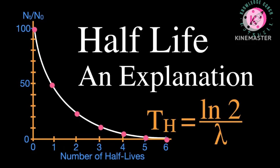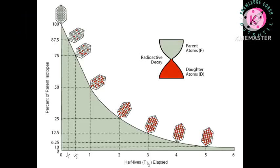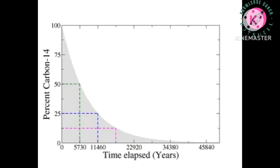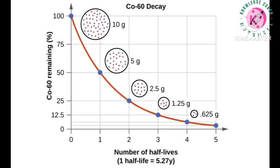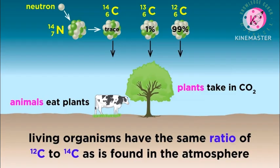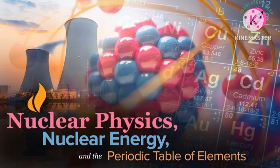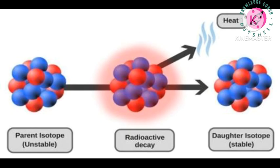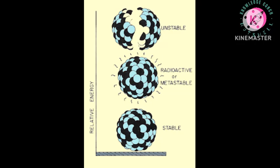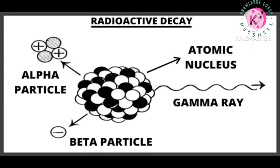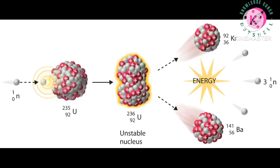Half-life, symbol T, is the time required for a quantity of substance to reduce to half of its initial value. The term is commonly used in nuclear physics to describe how quickly unstable atoms undergo radioactive decay or how long stable atoms survive.